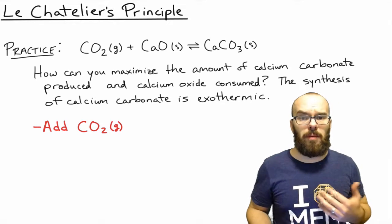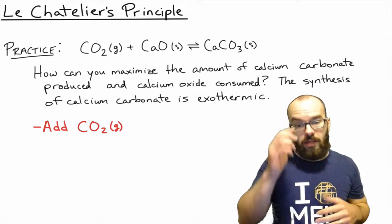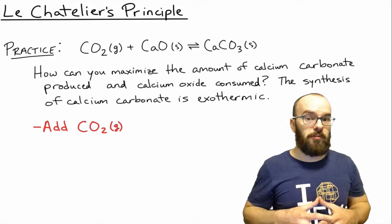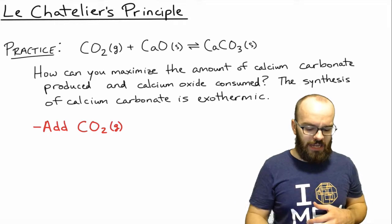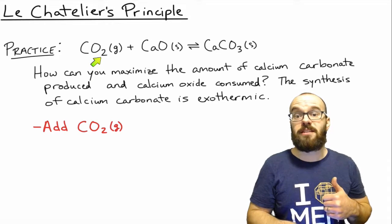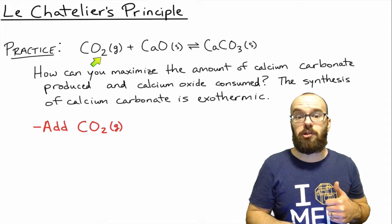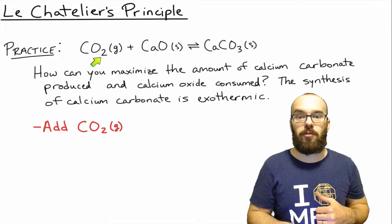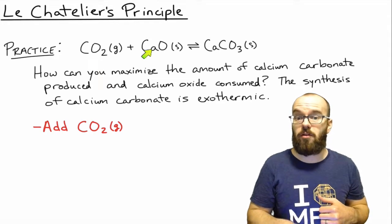A second thing you can do, what about pressure? Well, take a look. Where do you have the most number of moles of gas? Well, it turns out that the only gas you have is a reactant. So if you're going to increase the pressure, that would shift it toward the fewest number of moles of gas. That would be a shift toward the right.